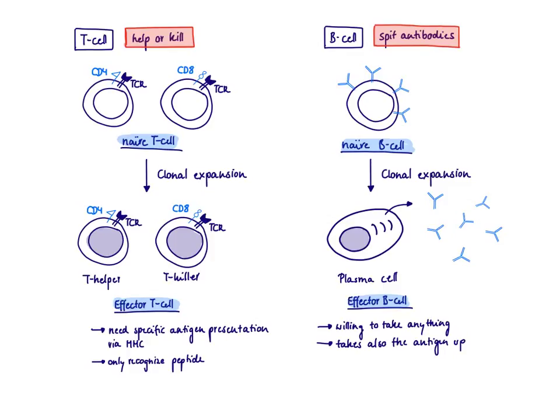So in contrast to the T cell, which we consider as a picky cell, the B cell is actually a pretty humble cell. There is not this specific packaging necessary. Antigen doesn't have to be presented in a specific way to the B cell. The B cell is willing to take anything, and it even takes up the antigen.